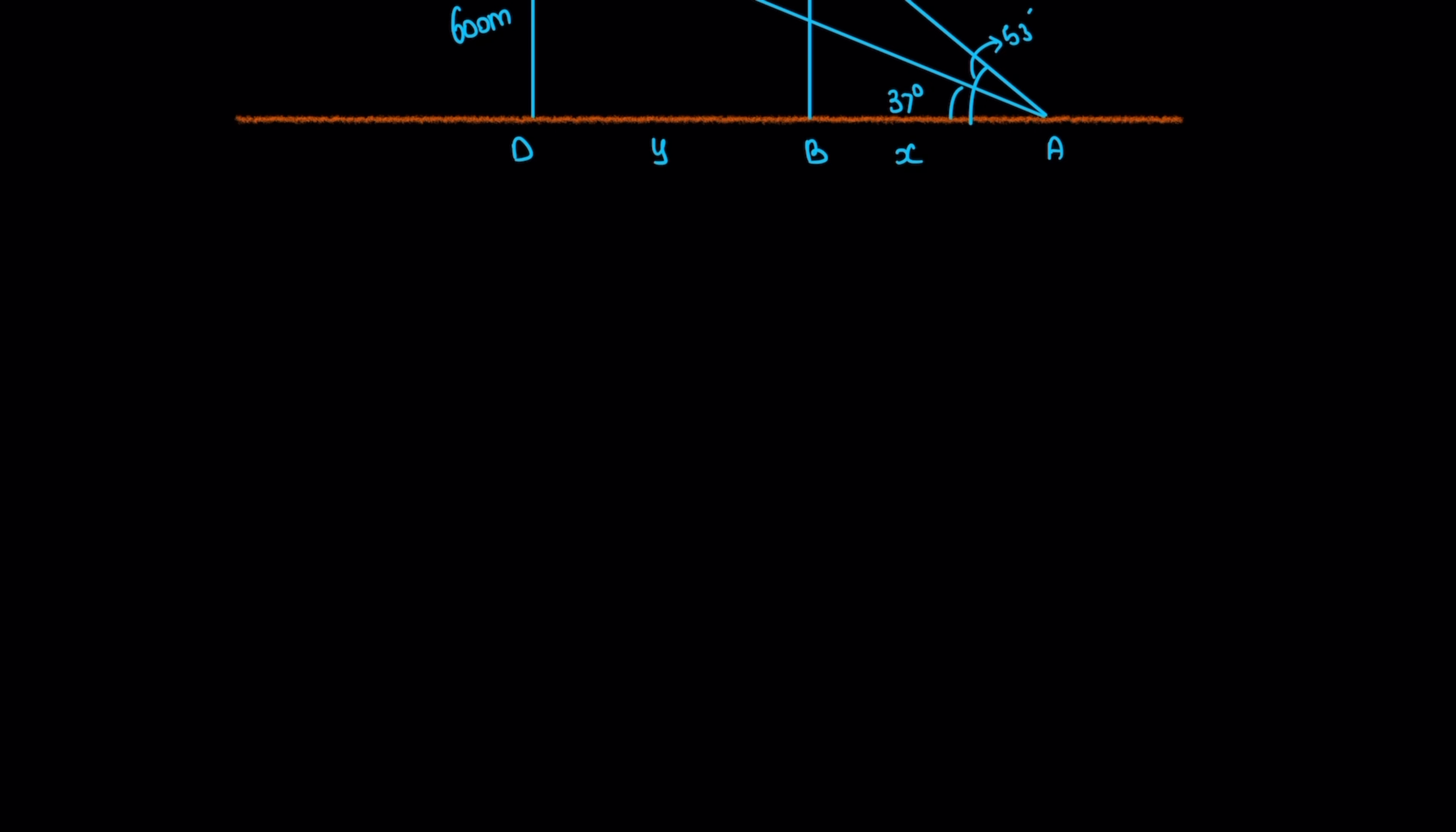In right angle triangle ABC, tan 53 equals BC divided by AB. Tan 53 value is 1.327. BC is the same height, 600 meters, divided by AB which is X.